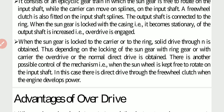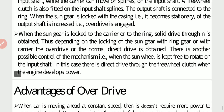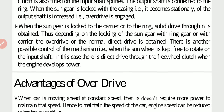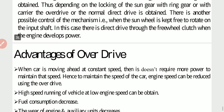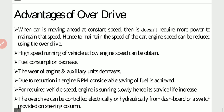When the sun gear is locked to the carrier or to the ring, a solid direct drive through neutral is obtained. Depending on the locking of the sun gear with the ring gear or with the carrier, overdrive or normal direct drive is obtained. When the sun wheel is kept free to rotate on the input shaft, there is a direct drive through the free wheel clutch when the engine develops power. So overdrive is basically used to attain higher vehicle speed.